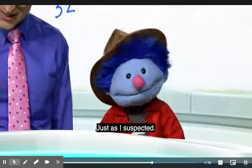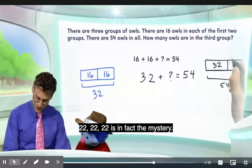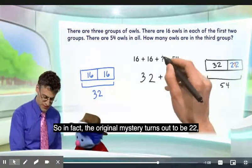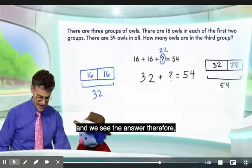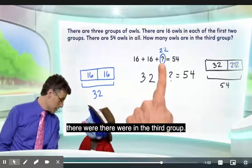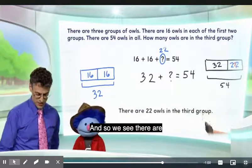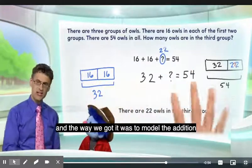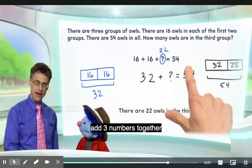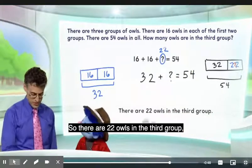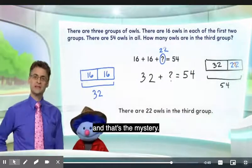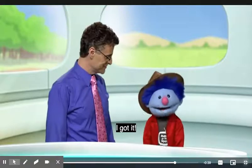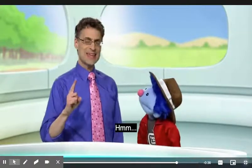Just as I suspect — 22! 22 is in fact the mystery. The original mystery turns out to be 22, and that represents how many owls were in the third group. There are 22 owls in the third group. The way we got it was to model the addition and see that even with three numbers, we could still find out what that last one is. There are 22 owls in the third group — that's the mystery solved.